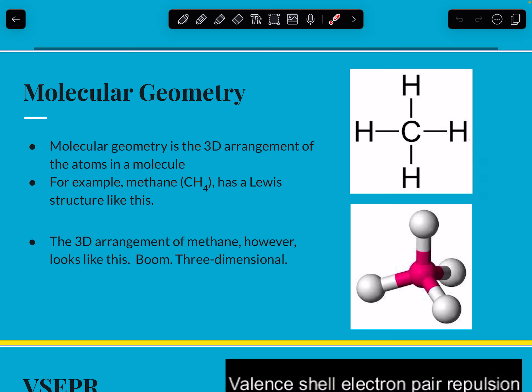So this is methane and methane has this Lewis structure, but obviously we live in a 3D world and in 3D the bonds are actually in this shape and it has a very specific name. So that's what we'll be learning is how to name the objective is I can name based on the theory of VSEPR.